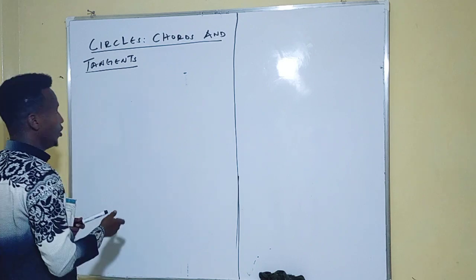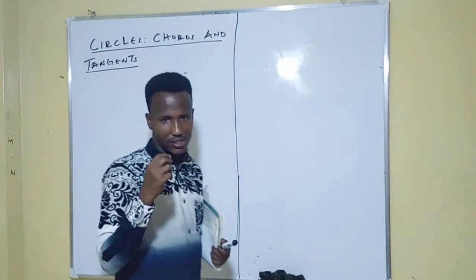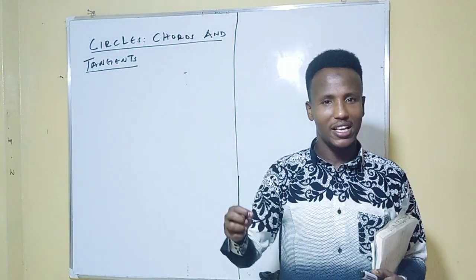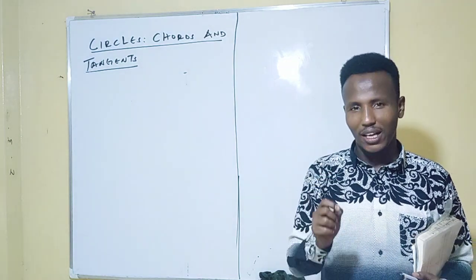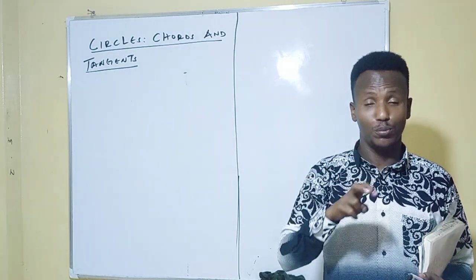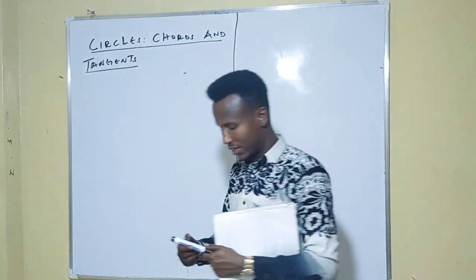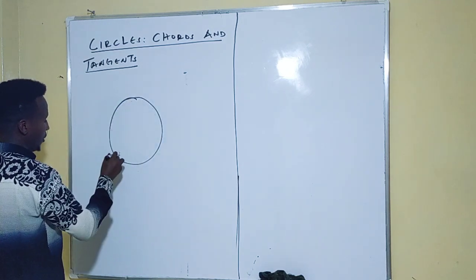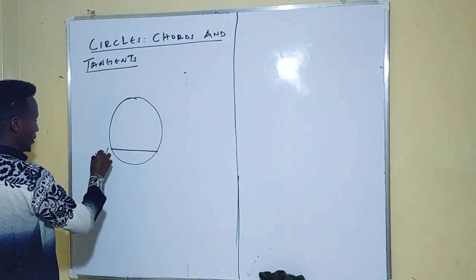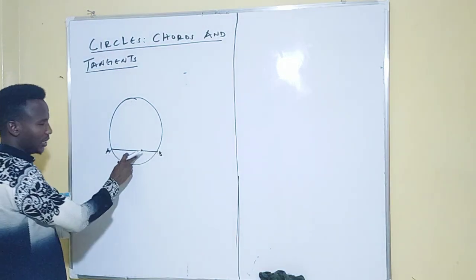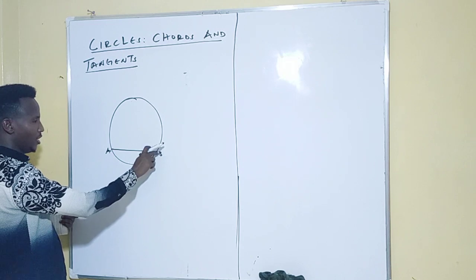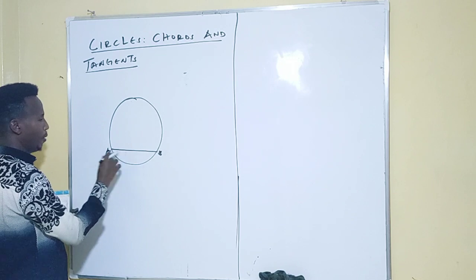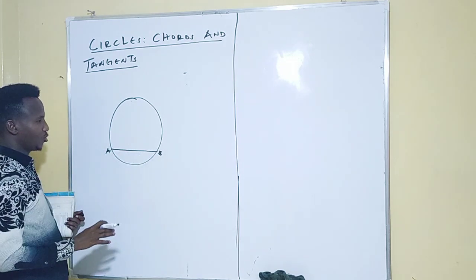A chord is a straight line which touches the circumference of the circle at two points but does not divide the circle into two equal parts. If I sketch for you — let's say this is point A and this is point B — so it's a straight line that touches the circumference of the circle at two points A and B, but does not divide the circle into two equal parts.